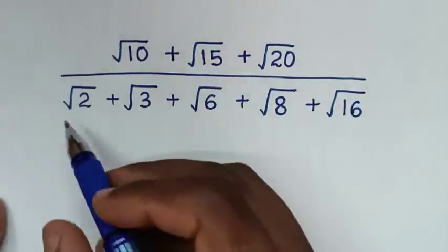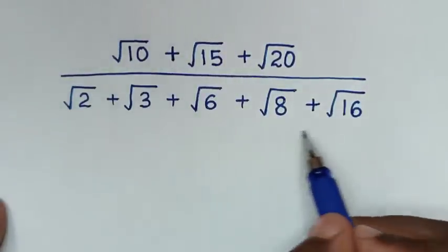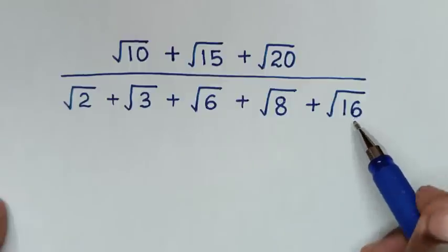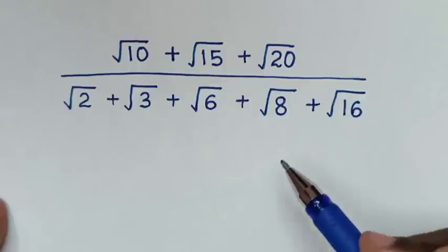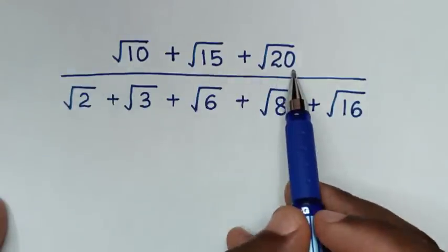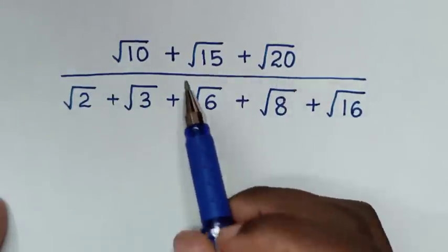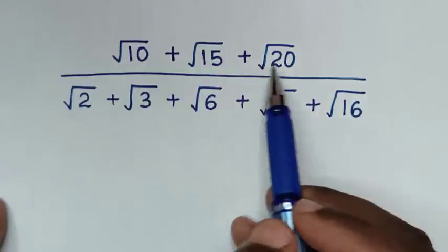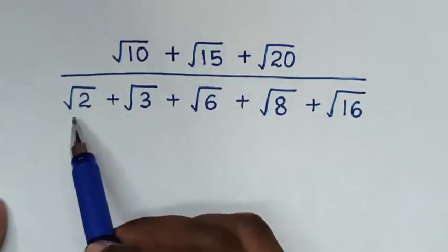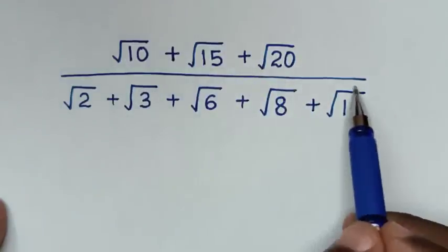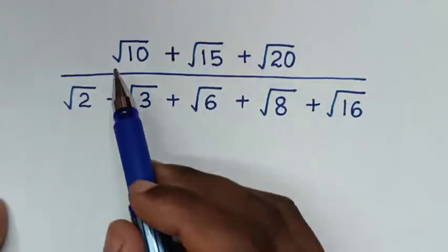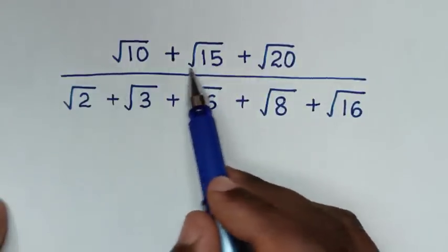Hello, you're welcome to simplify this radical problem. In the first step, we start by simplifying the numerator. After we get the simplified value in the numerator, we divide by the simplified value in the denominator. So, let's start by simplifying the numerator,